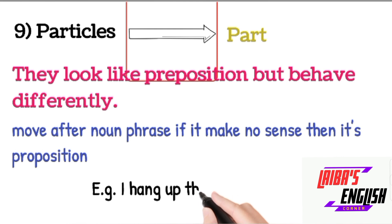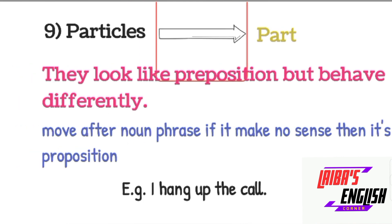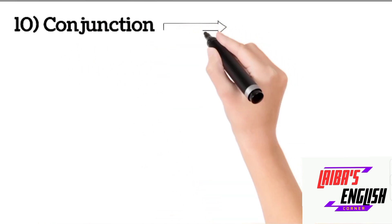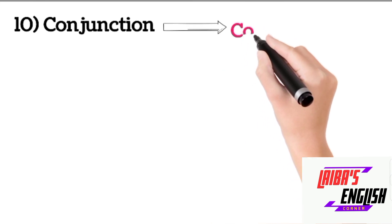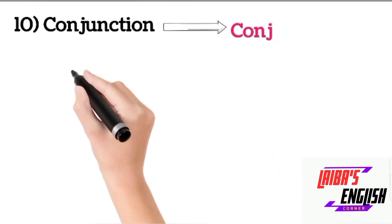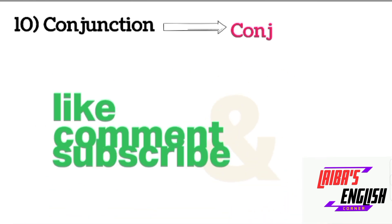For example, 'I hang up the call' — here 'up' looks like a preposition. If you move it after the noun phrase: 'I hang the call up,' which still makes sense, so it is a particle. The last lexical category is conjunctions. We all know that conjunctions basically join phrases, clauses, and sentences, and conjunctions are denoted by CONJ.